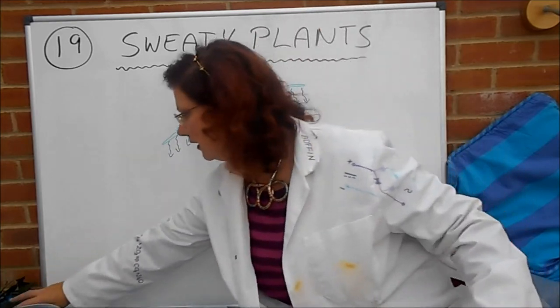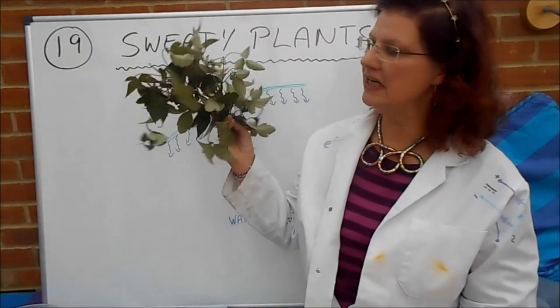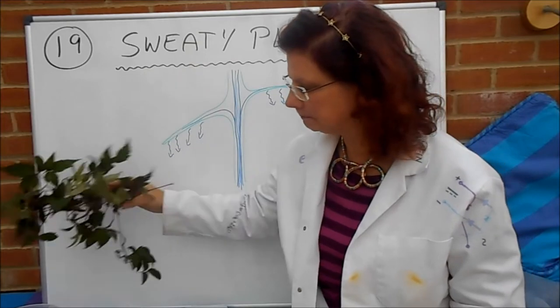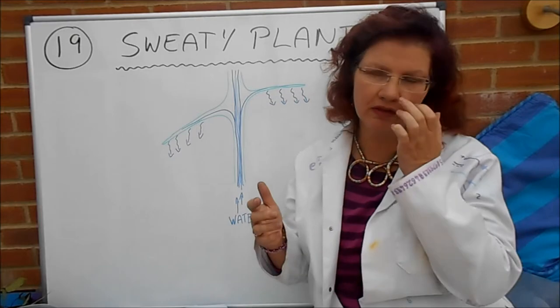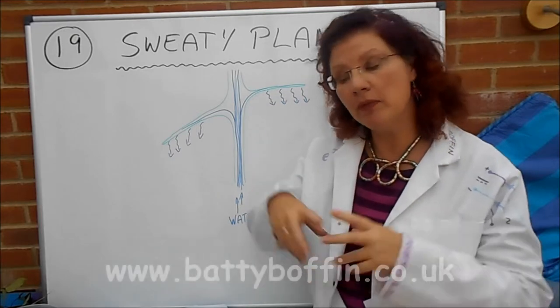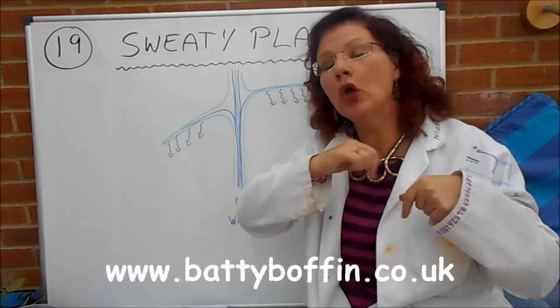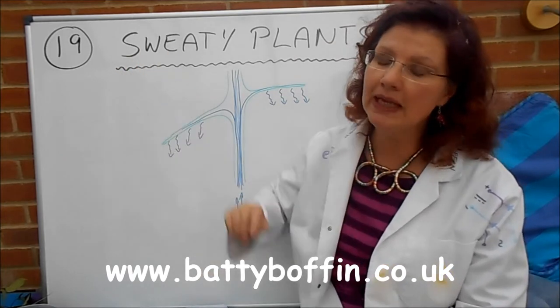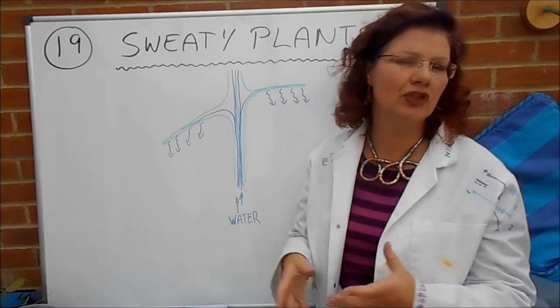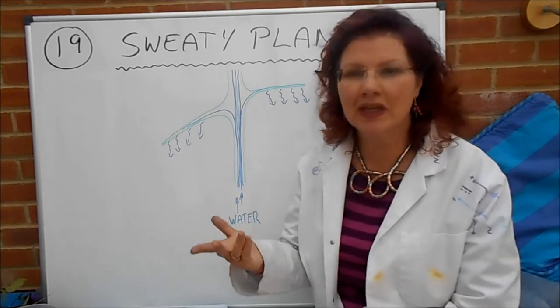And you'll also need some bits of green leafy something or other. Now what we're going to do here is we're going to make up three initial setups, and then there's others as well you can do. Have a look on the Batty Boffin website, www.battyboffin.co.uk, where you'll be able to find a downloadable project sheet for this. It's number 19 and it's got all the instructions, all the stuff you need on there and some ideas for extension.